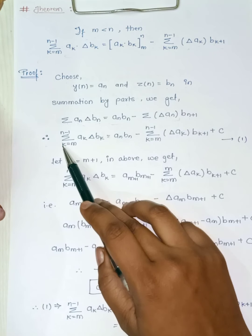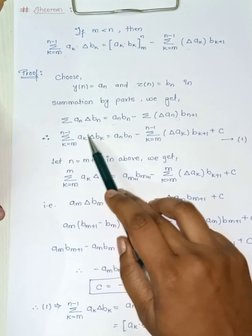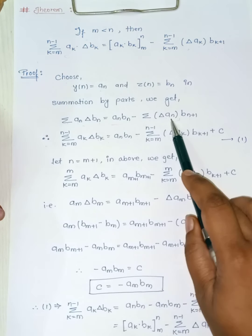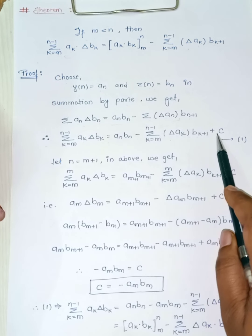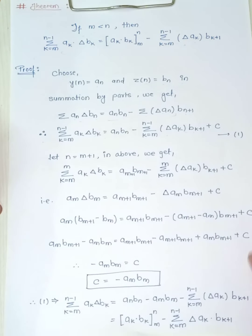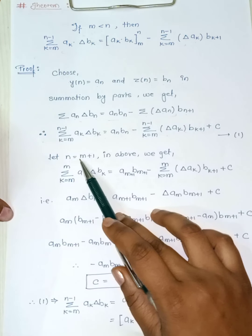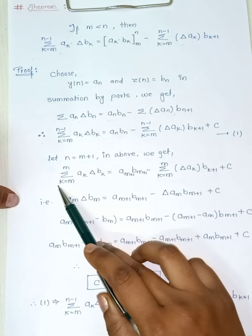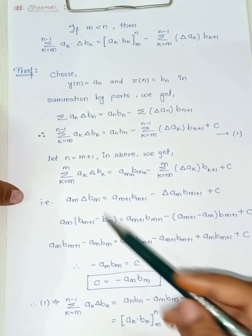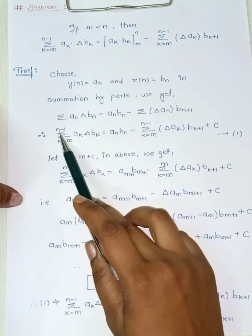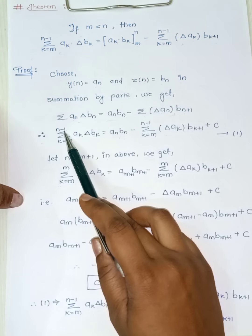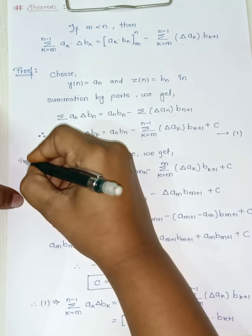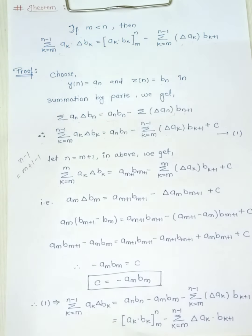Therefore, summation over k equals m to n minus 2 gives us the expression with a_k and b_{k+1} plus a constant. Now we let n equals m plus 1 in the above equation. Substituting n equals m plus 1, the upper limit k goes from m to n minus 1 becomes k equals m, and n minus 1 becomes m plus 1 minus 1.